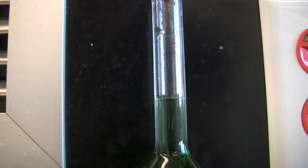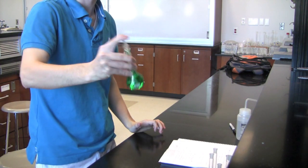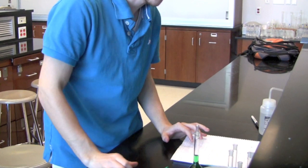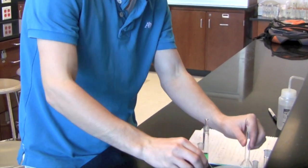Continue to shake your solution to make sure that it's all dissolved in the water. We will now make different concentrations by diluting the 50 milliliter stock solution into separate 25 milliliter volumetric flasks.